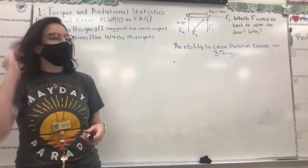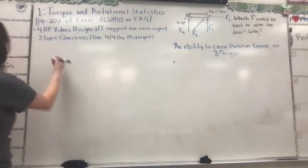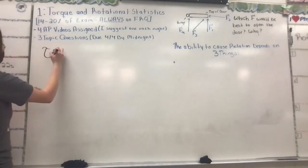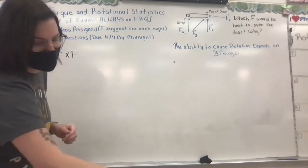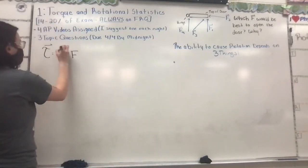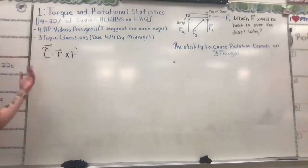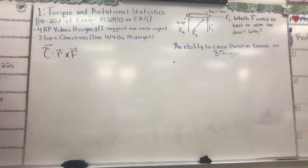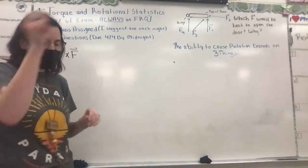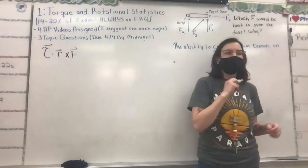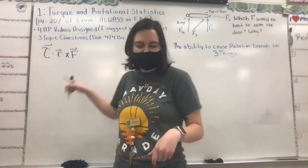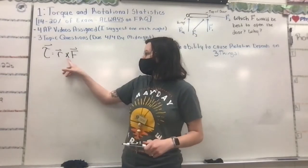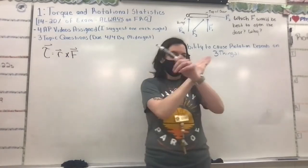The essential knowledge they want you to get out of this is the definition for torque. Torque is equal to r cross F. That's just how they write it — with a fancy tau, because the regular T stands for period or time period. Torque is a vector and it is a cross product — r cross F, written with an × symbol.